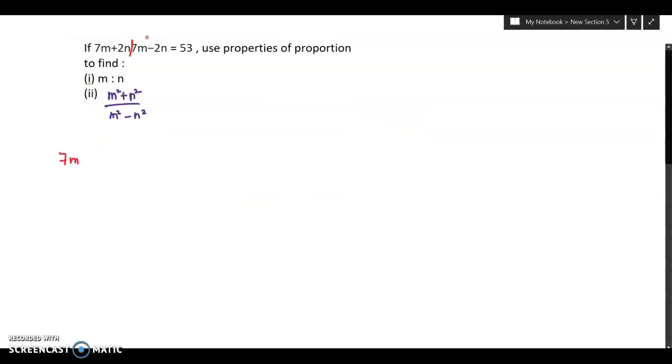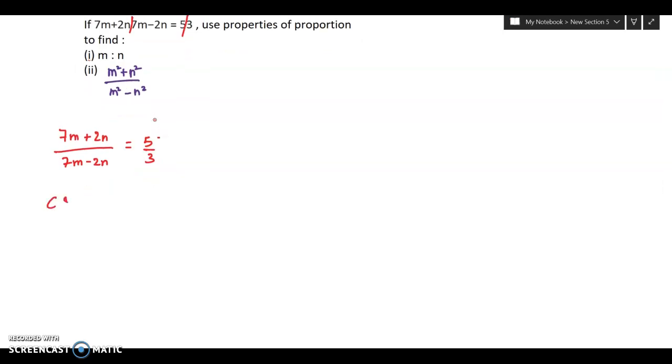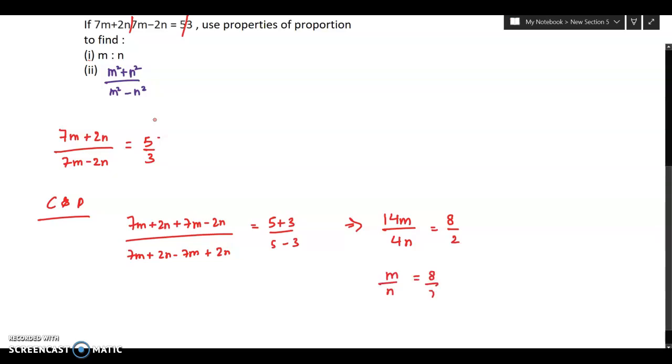The question here is: if 7m plus 2n divided by 7m minus 2n is equal to 5 by 3, use properties of proportion to find m by n and second part m square plus n square divided by m square minus n square. I will apply componendo and dividendo. This will be 7m plus 2n plus 7m minus 2n divided by 7m plus 2n minus 7m plus 2n equal to 5 plus 3 divided by 5 minus 3. After solving, you will get 14m by 4n equal to 8 divided by 2. So m by n will be 8 by 7, that is 8 is to 7.